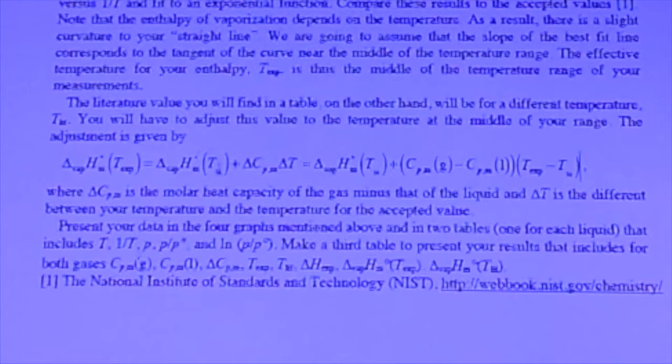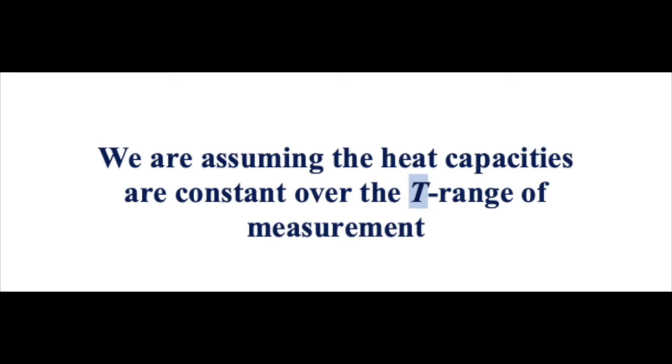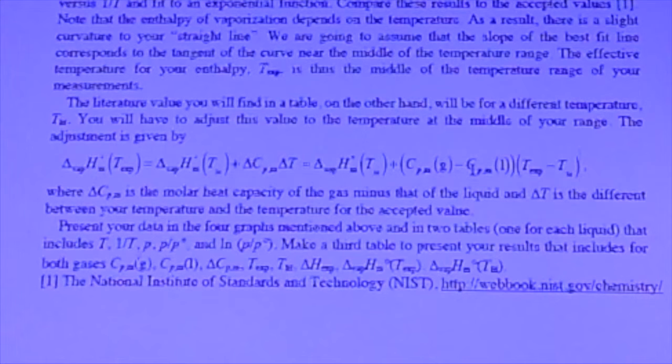You have to look up in the NIST WebBook what temperature that value was taken at. To correct it, we need this Δcp ΔT term. The Δcp part is just the heat capacity of the gas minus the heat capacity of the liquid.